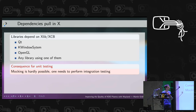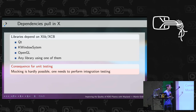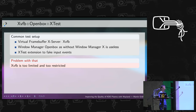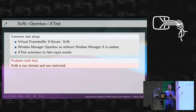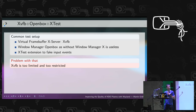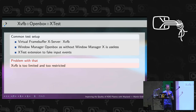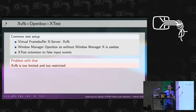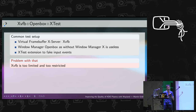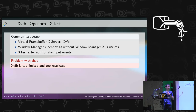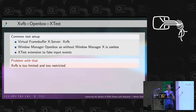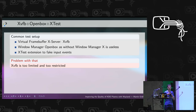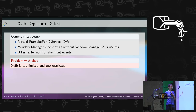My conclusion was that mocking is not possible — we have to perform integration testing. The normal integration test setup for X11 is to run Xvfb, run OpenBox as a window manager on top, and use the XTest extension to simulate input devices. The problem is that Xvfb is rather limited and too restrictive, and with XTest I can simulate mouse clicks and key presses but not things like smooth scrolling or touch events.